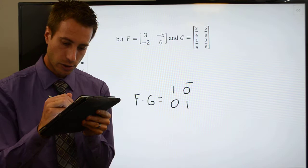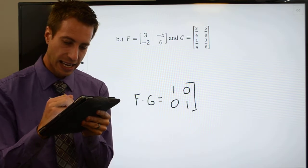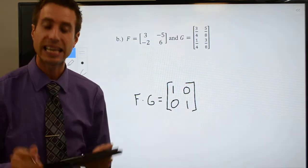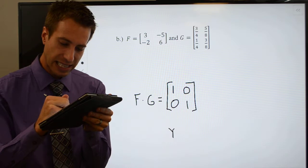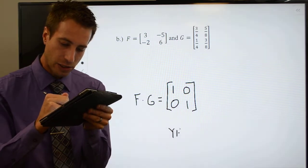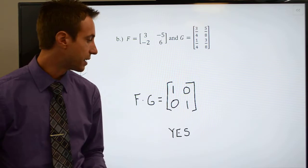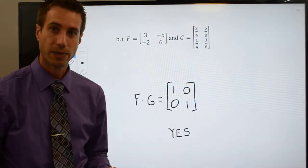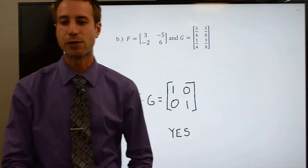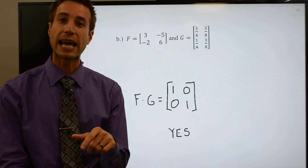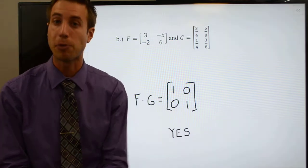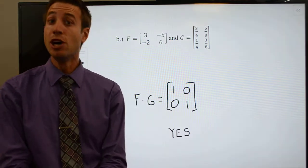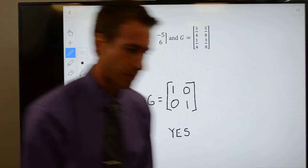I do get the identity matrix. So are these guys inverses? Yes — F and G are inverses of each other. That's great work on finding inverses of matrices. What we're going to look at on the next page is a couple more example prompts, so head on over there and I'll meet you guys on that page.